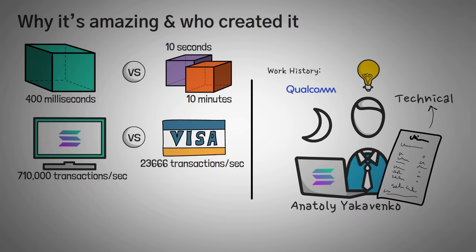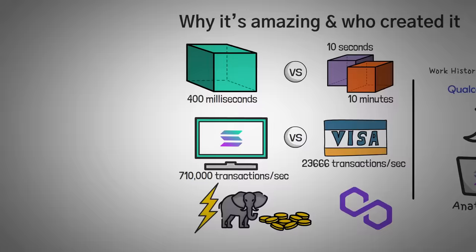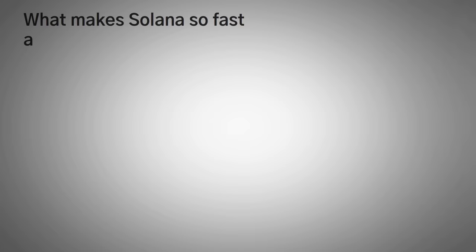So the Solana network is fast, it's monstrous, and it's also cheap. I would say that it's comparable to the Matic network, with transaction fees around one hundredth of a penny. Next up, let's get into what makes them so fast and so cheap.